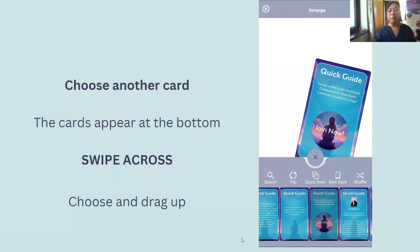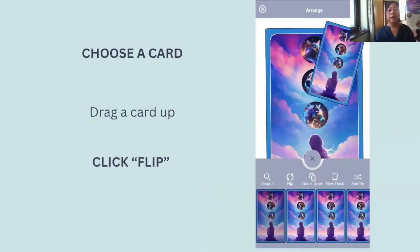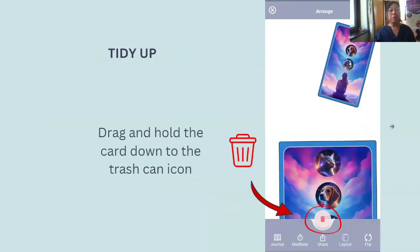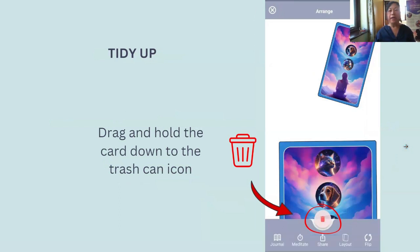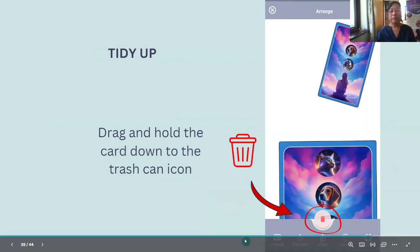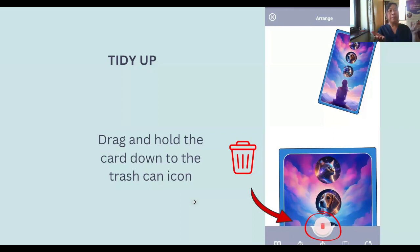To get rid of one of the cards and keep things tidy, hold that card down with your finger and drag it. When you drag it, the trash can should light up, then just move it towards the trash can and you'll be left with one card. When you bin a card, does it go back to the bottom? Yes, it goes back — it's like you put your card back in your deck.